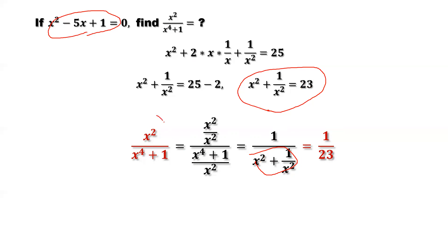So the final result, we want to find x squared over x to the power of 4 plus 1 is 1 over 23. This is the answer.